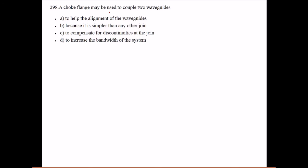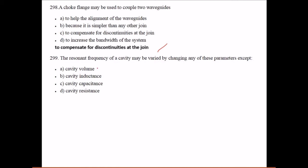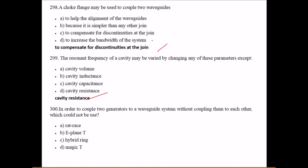The choke flange may be used to couple two waveguides to compensate the discontinuity at the joint. The resonant frequency of a cavity may be varied by changing any of these parameters except cavity resistance. In order to couple two generators to a waveguide system without coupling them to each other, E-plane T cannot be used.